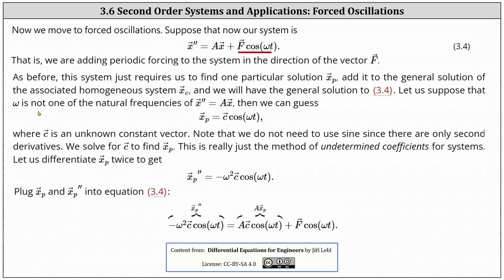Suppose that omega is not one of the natural frequencies of x double prime equals A times x. Then we guess x sub p, a particular solution, equals C times cosine of omega t, where C is an unknown constant vector. Note that we do not need to use sine since there are only second derivatives in our equation. We solve for C to find x sub p using the method of undetermined coefficients for systems. We differentiate x sub p twice to get x sub p double prime equals negative omega squared times C times cosine of omega t.